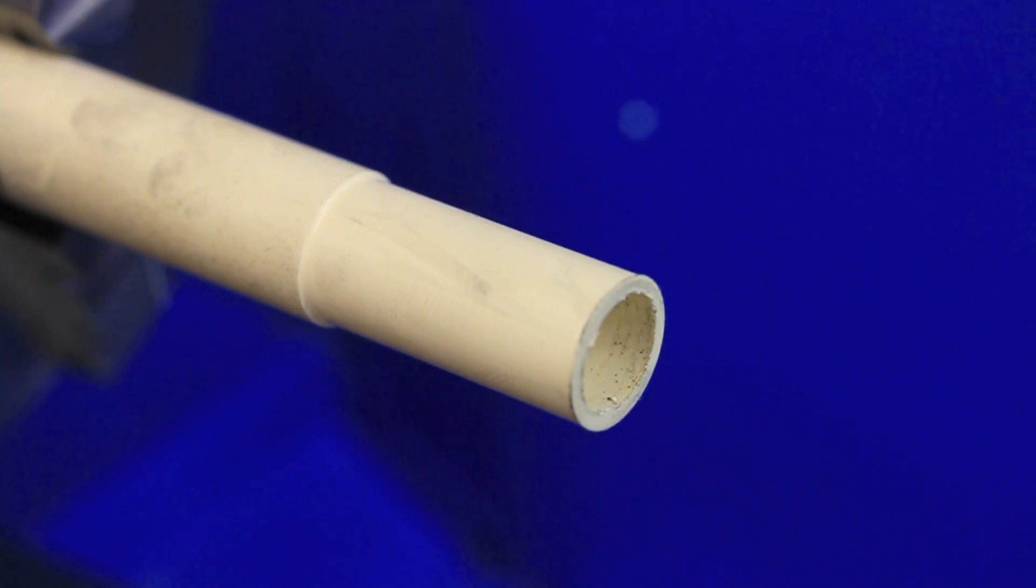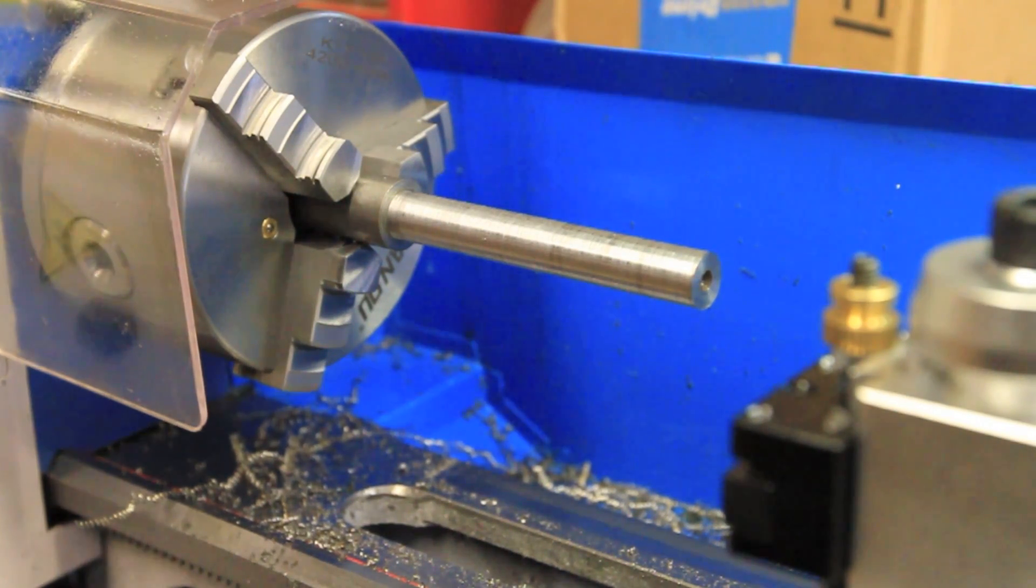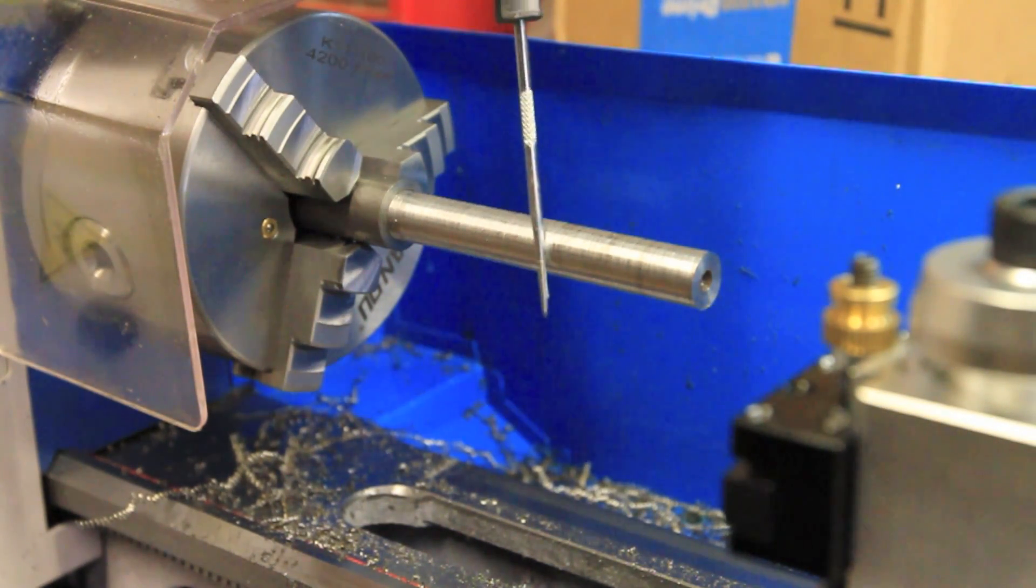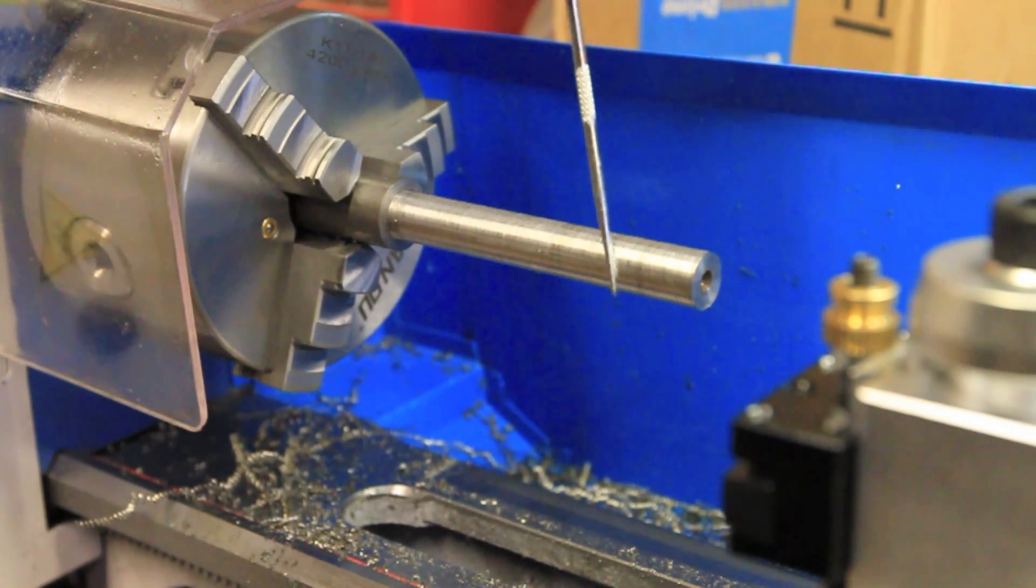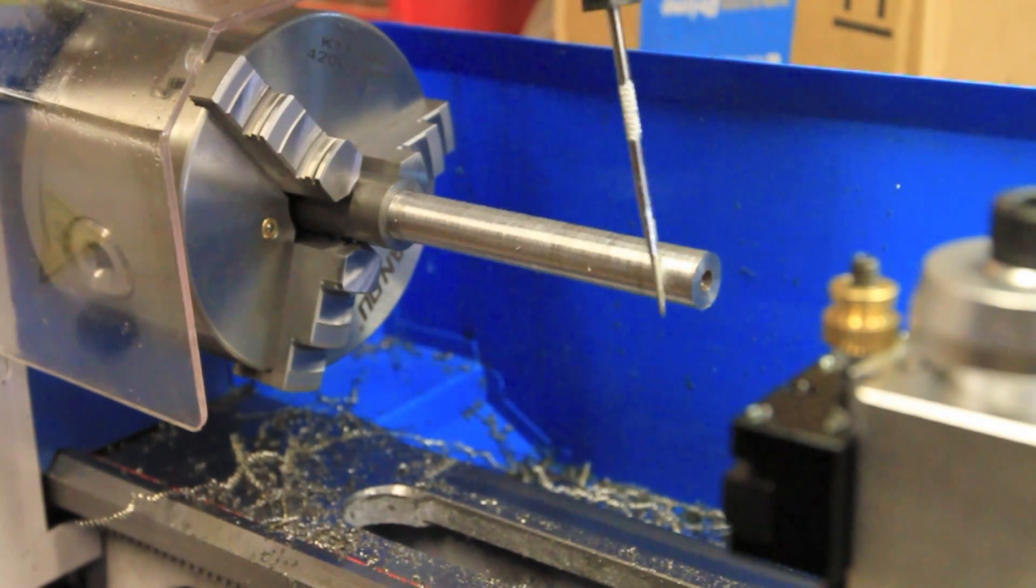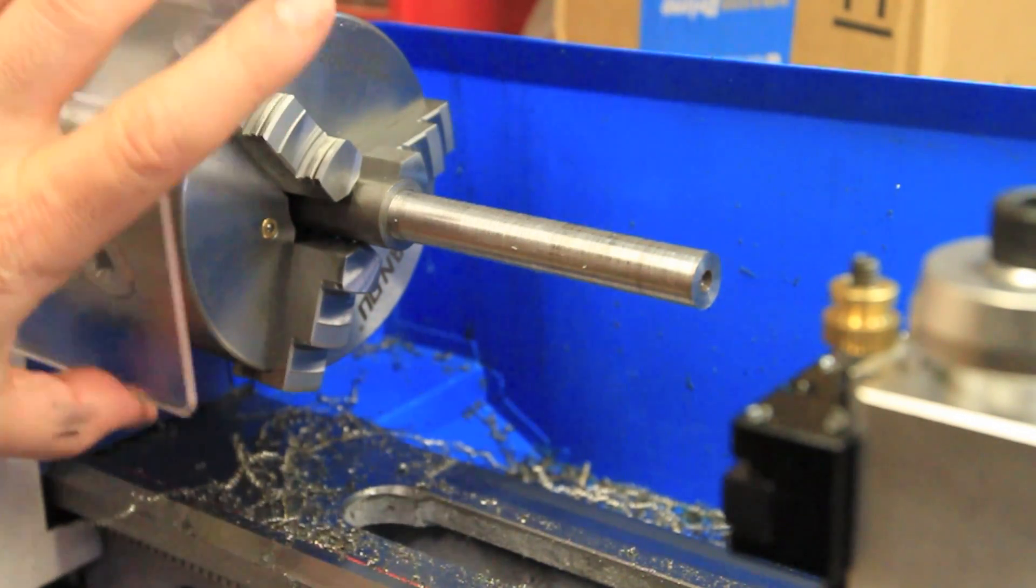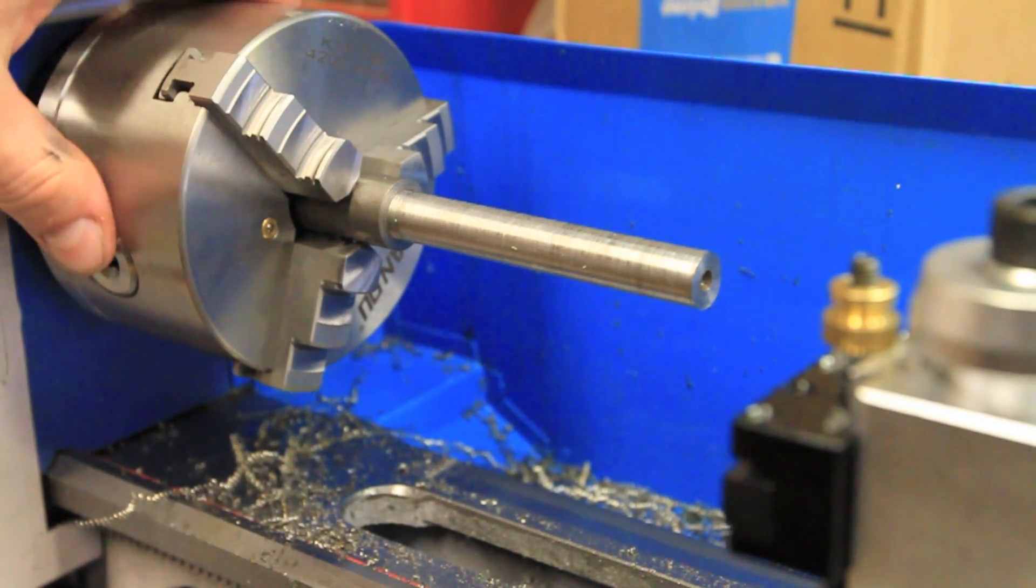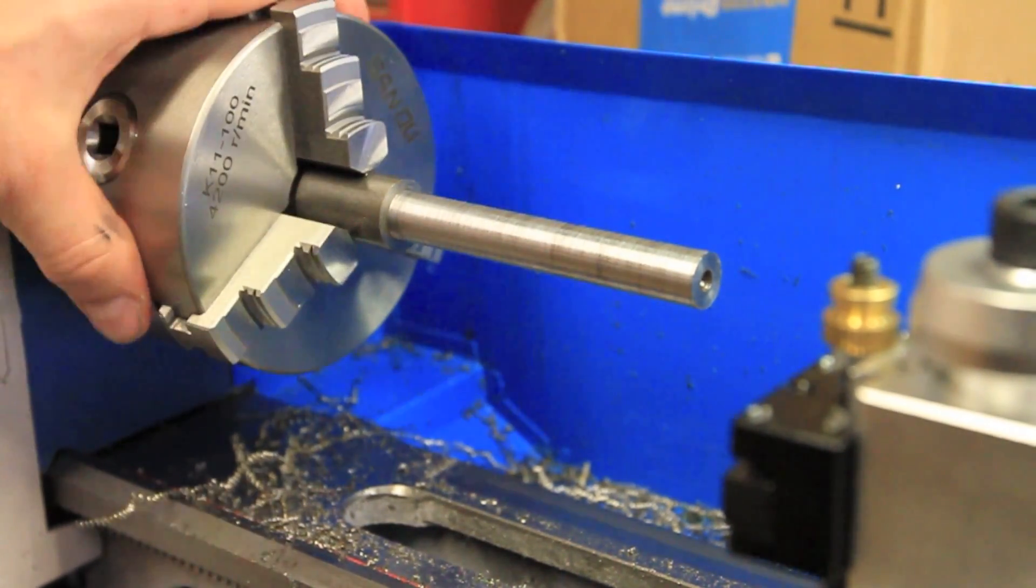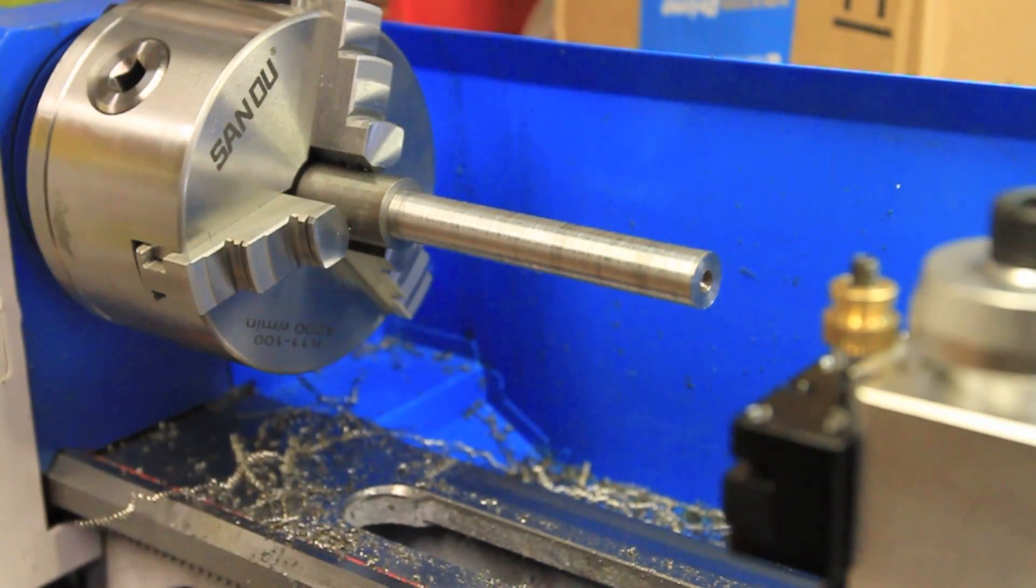Now to turn some mild steel. This is a piece of 1018 mild steel, 3/4 inch in diameter that I turned down to just over half an inch. The finish is impressively not as terrible as it could be. So far I'm pretty impressed with how this performs on metal.